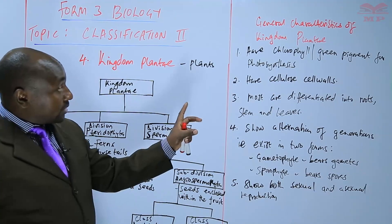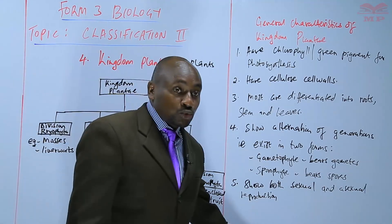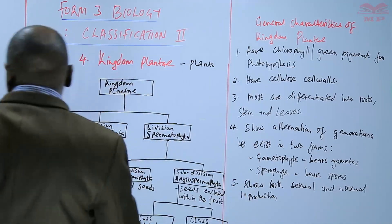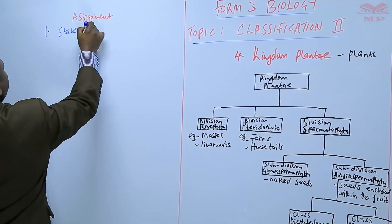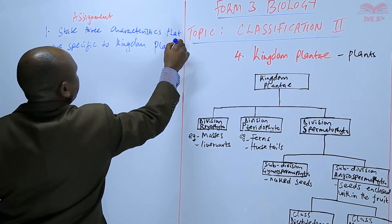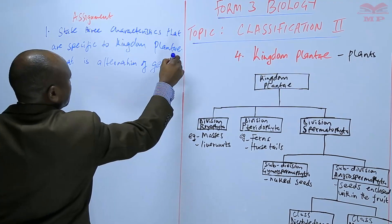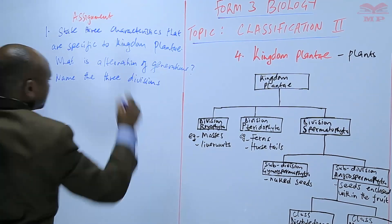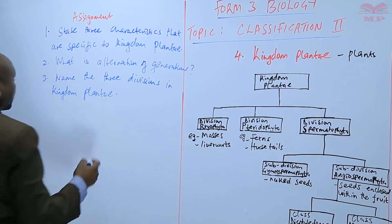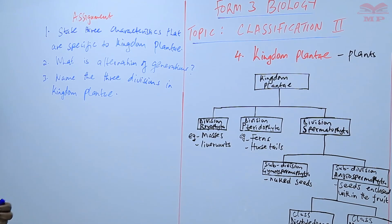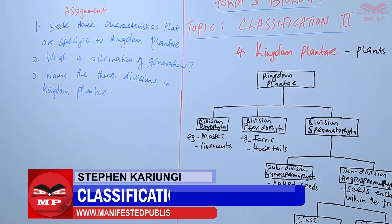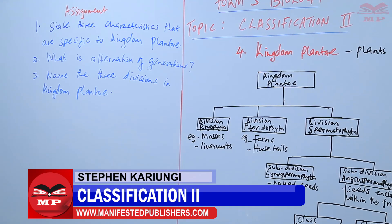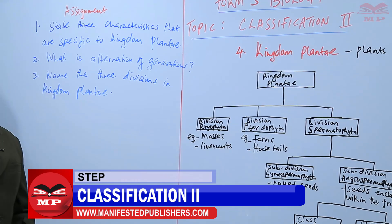We are going to stop there with the introduction to Kingdom Plantae. We will have a brief assignment. Question one: state three characteristics that are specific to Kingdom Plantae. Question two: what is alternation of generations? Question three: name three divisions in Kingdom Plantae.